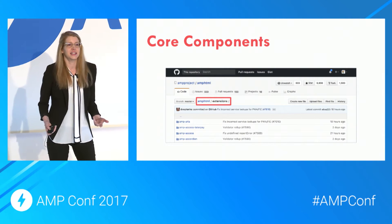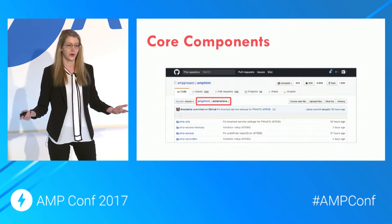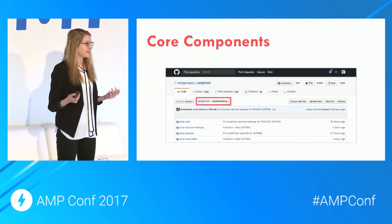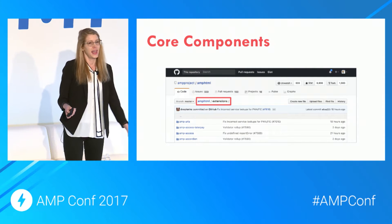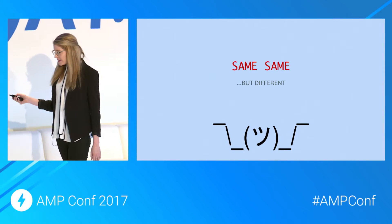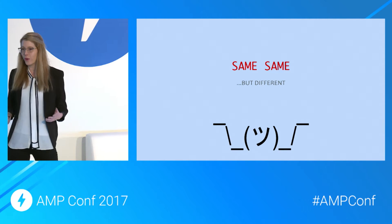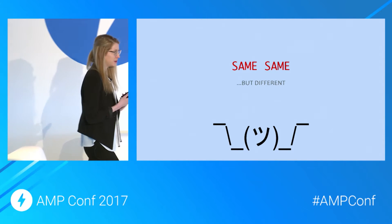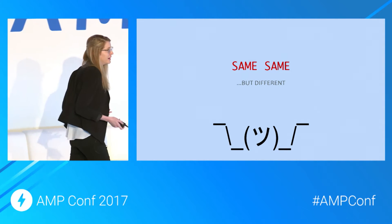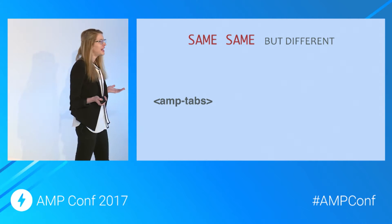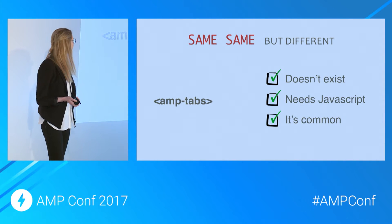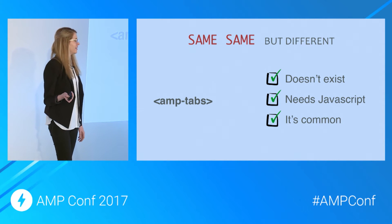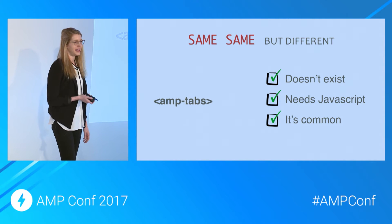All these things I mentioned are considered core components — they belong in the AMP HTML project under the extensions directory. There is also a use case where you might want to develop something that already kind of exists but you want to add a twist. A great example is amp-tabs: amp-tabs does not exist, it needs JavaScript, and tabs are a pretty common thing in web pages — so let's build an amp-tabs component.